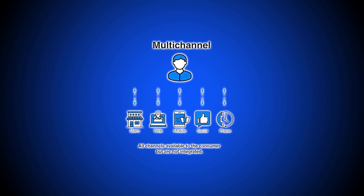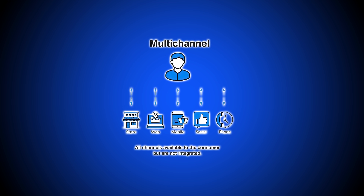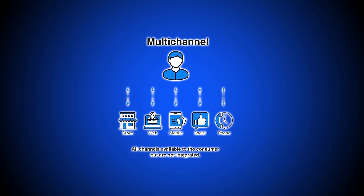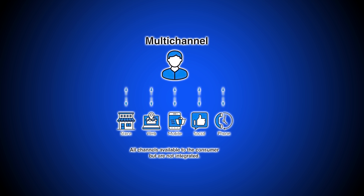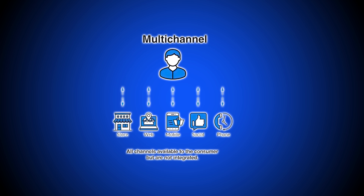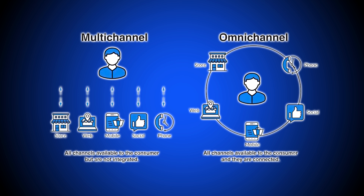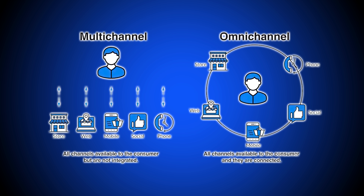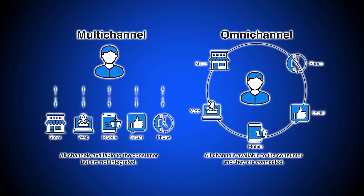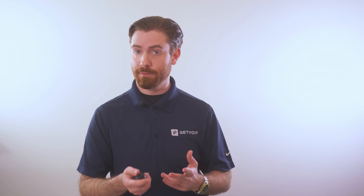Multi-Channel Routing refers to routing communication in a contact center on multiple channels such as voice, email, and chat. A call center that has multi-channel routing may route queries on some or all of the channels they use. Omni-Channel Routing also provides multiple avenues of communication, but the difference is that with Omni-Channel Routing, all interactions are unified on a single pane of glass.